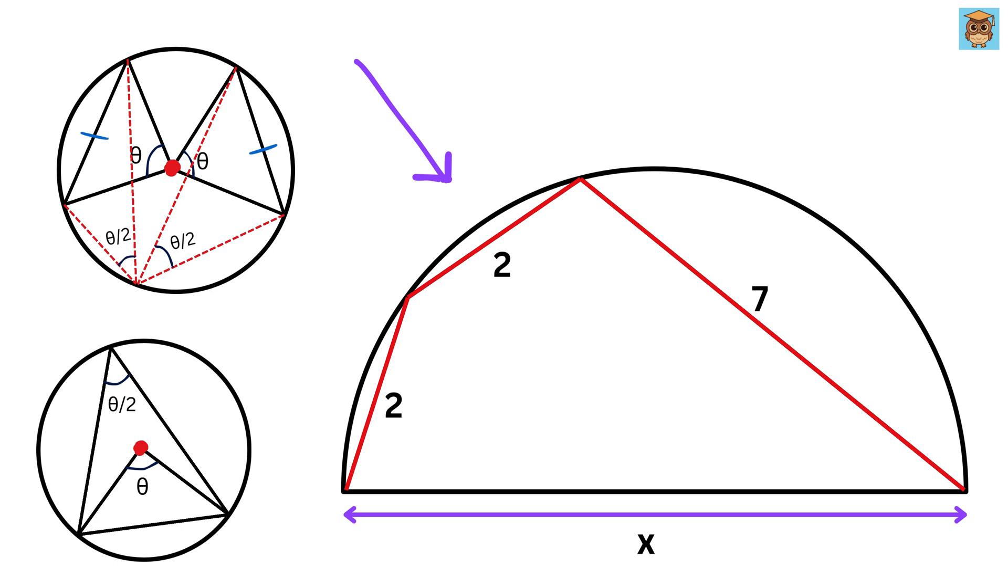Now in this semicircle, consider these two chords and this point. Since both these chords are of same length, thus if we connect them to this point like this, both of them will subtend the same angle, and we will call this angle as Theta. Awesome!